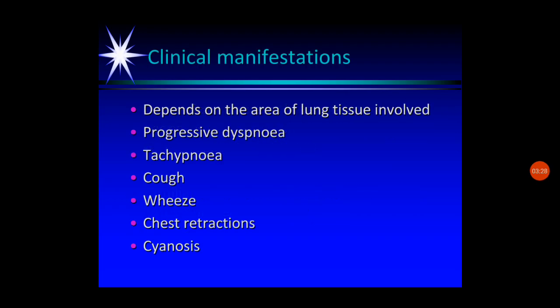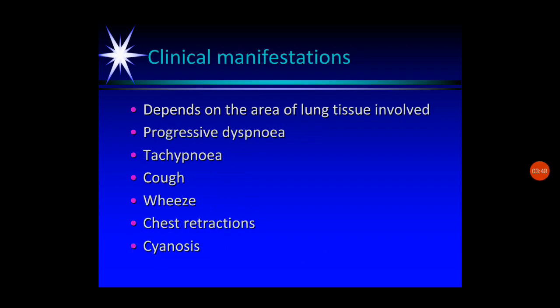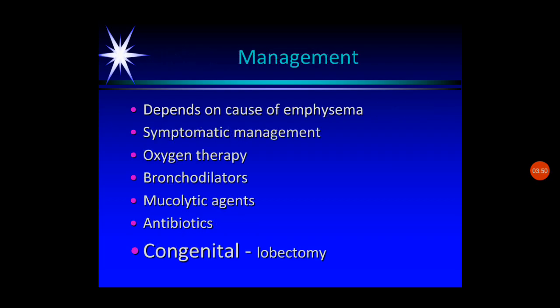The clinical manifestations depend upon the area of lung tissue involved and how much area is involved. These include progressive dyspnea, tachypnea, cough, wheeze, chest retractions, and cyanosis. These are the manifestations of emphysema.